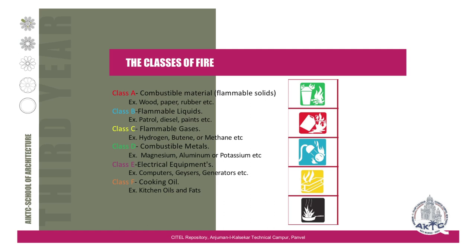Class B is flammable liquids. If a fire is started by flammable liquids such as petrol, diesel, and paints, it comes under Class B. Knowing these classes matters because they determine which fire extinguisher to use. Class C is flammable gases — fire started by gases such as hydrogen, butane, or methane. Class D is combustible metals such as magnesium, aluminium, or potassium — different from Class A which covers solid flammable materials.